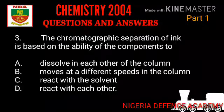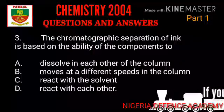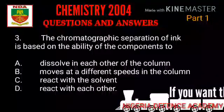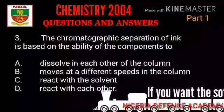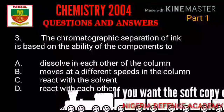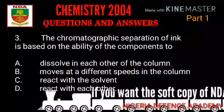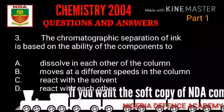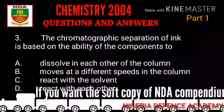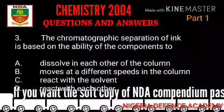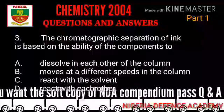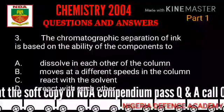The next question: chromatographic separation is based on the ability of the components to do what? Option A: dissolve in each other in the column. Option B: move at different speeds in the column. Option C: react with each other. Which option here is the best answer?